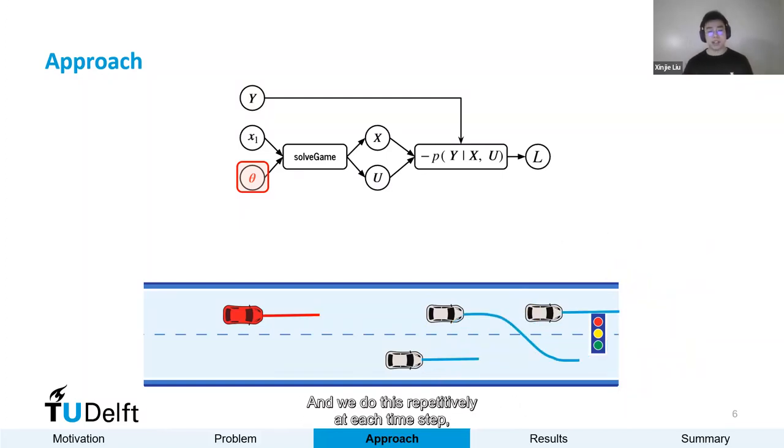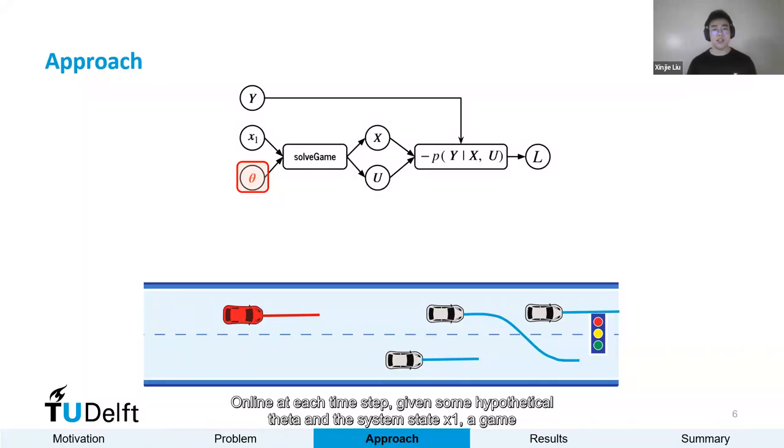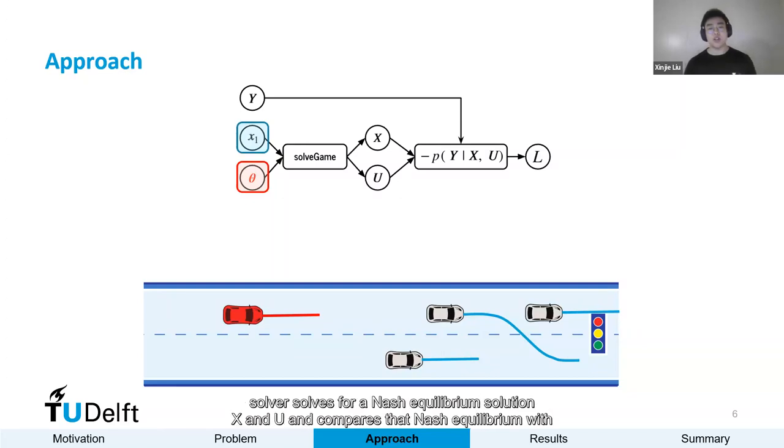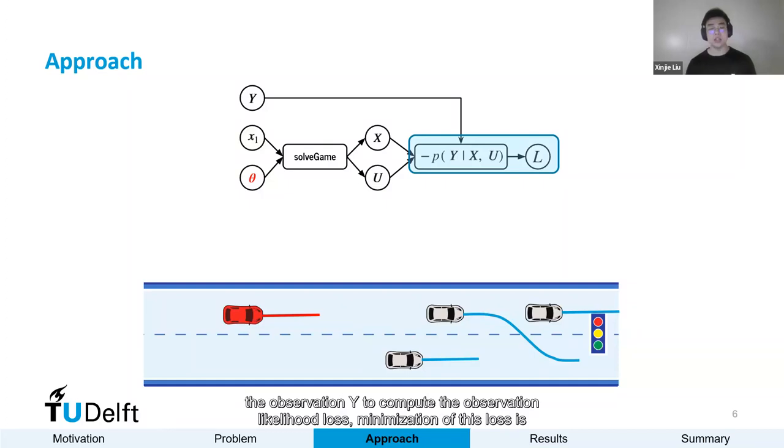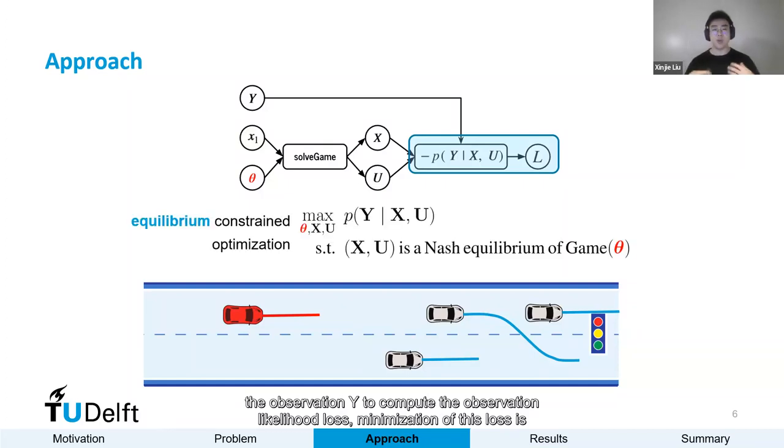We do this repetitively at each time step, which is referred to as model predictive gameplay. Online, at each time step, given some hypothetic theta and the system state x1, a game solver solves for a Nash equilibrium solution x and u, and compares that Nash equilibrium with the observation y to compute the observation likelihood loss. Minimization of this loss is formulated as an equilibrium constraint optimization problem, which is challenging to solve.